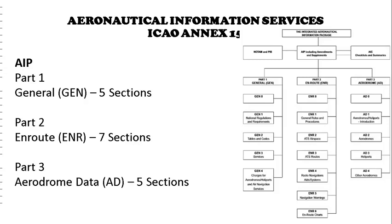General 3 is about services, which include aeronautical information services, aeronautical charts, air traffic services, communication services, meteorological services, and search and rescue. General 4 is about aerodrome and air navigation services.